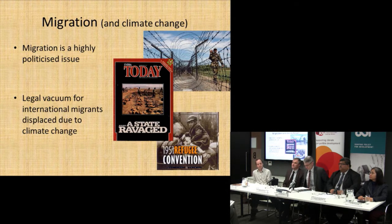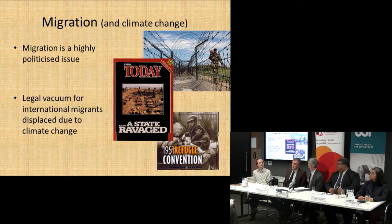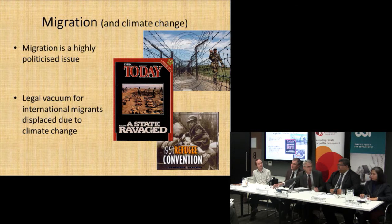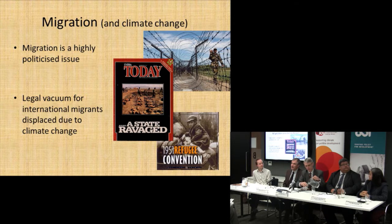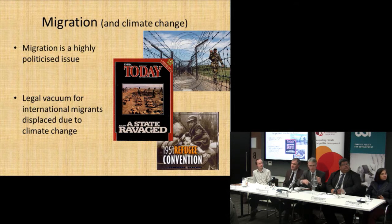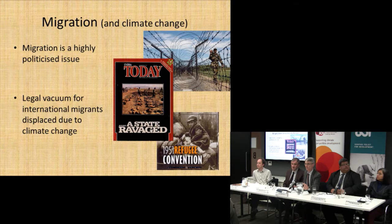Migration and climate change is a highly political issue. Those pictures, if you're familiar with Bangladesh, show possibly one solution to climate migration — building a two-metre high double barbed wire fence between Bangladesh and India. It's one form of adaptation, I suppose. These photographs from India Today show a highly political situation where some Bangladeshis were murdered in Assam.